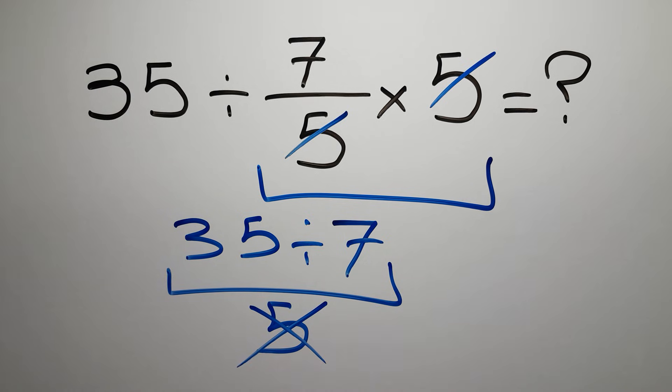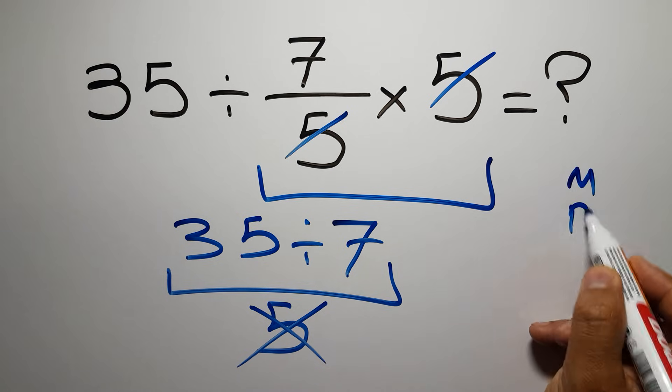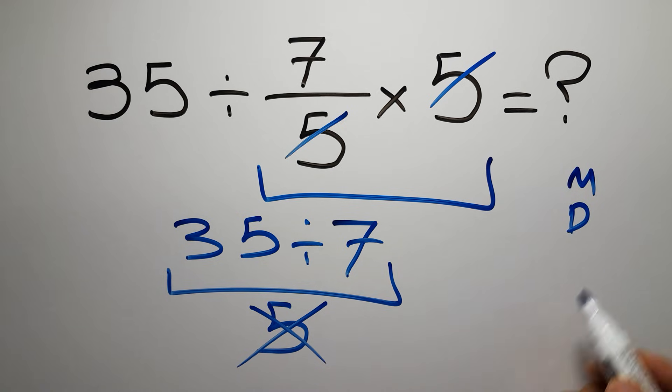Because according to the order of operations, multiplication and division have equal priority and we have to work from left to right.